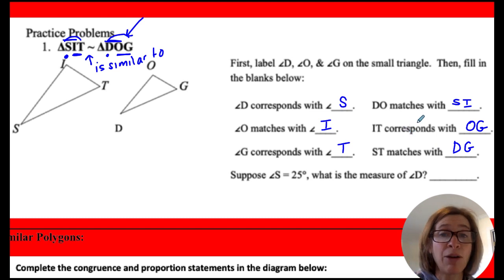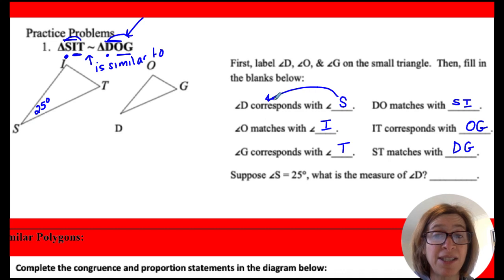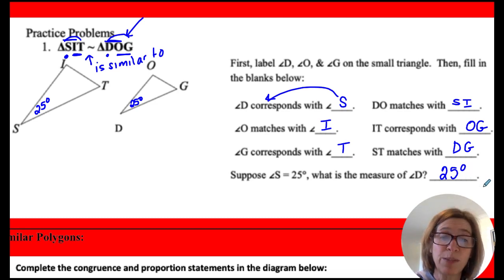Now, again, the angles will be congruent. The sides will be in proportion. So if the angles are congruent and I tell you that angle S is 25 degrees, well then I know that S corresponds to D. So angle D will also be 25 degrees. So that's a little bit about correspondence.